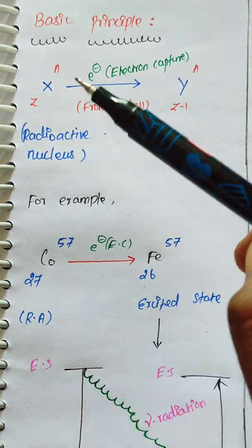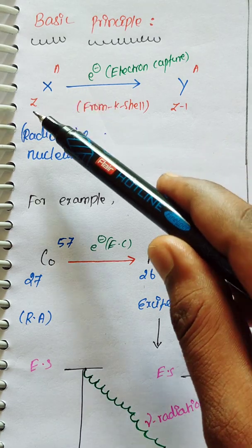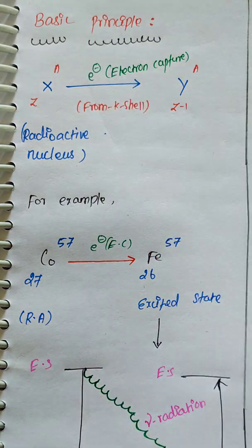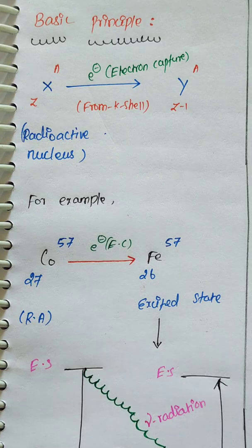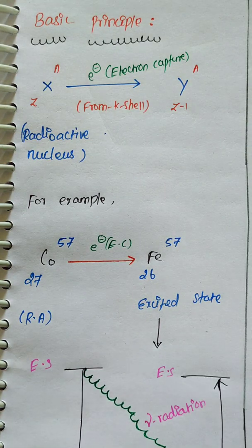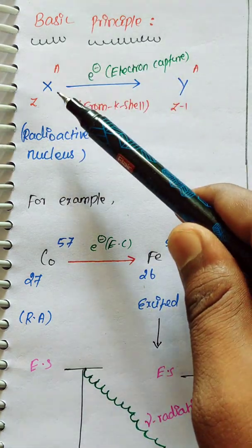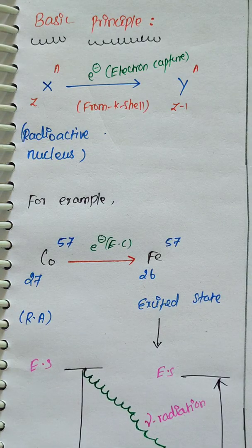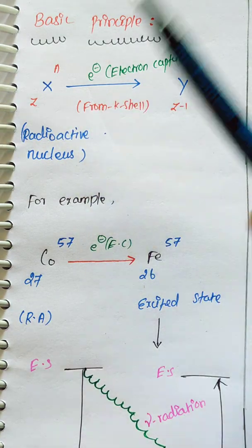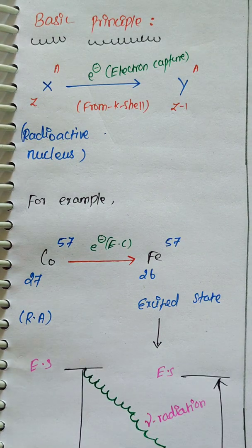X is the radioactive nucleus — this is the atomic number and this is the mass number. When it undergoes electron capture, the atomic number is also reduced. Now X is converted into Y through electron capture. The electron is captured from the K-shell. For example, I am going to take cobalt-57. Its atomic number is 27. It is a radioactive nucleus and when it undergoes electron capture, one of the electrons is reduced.